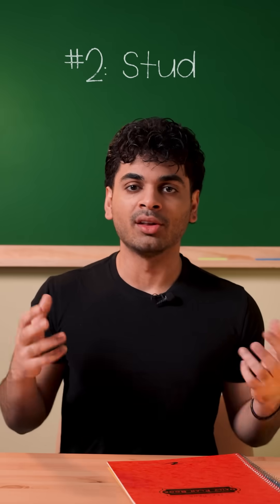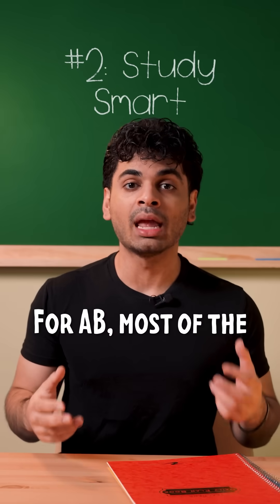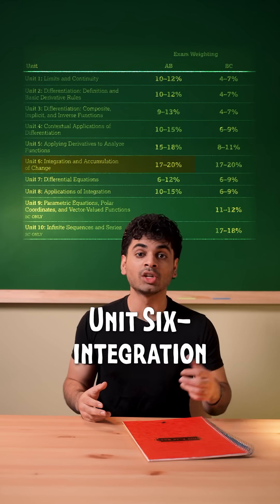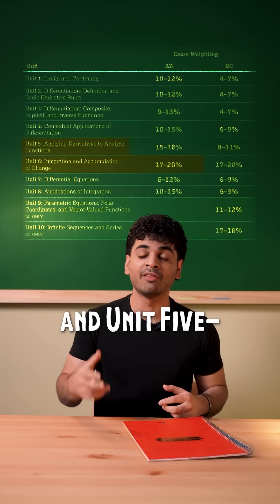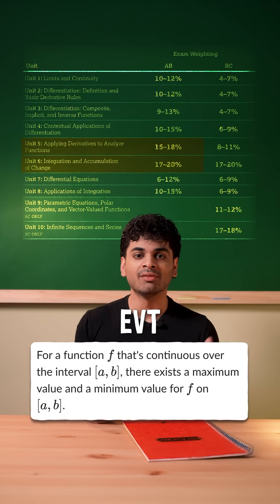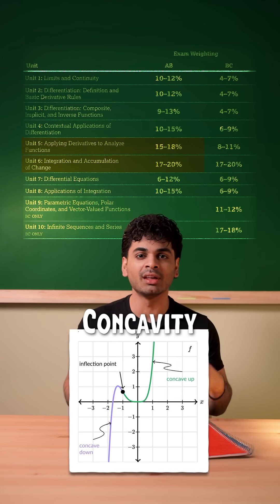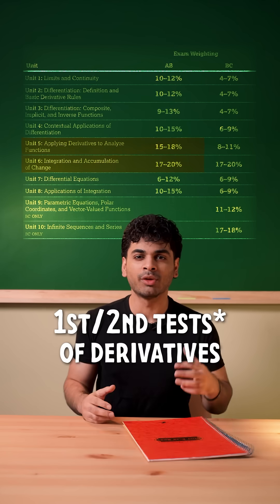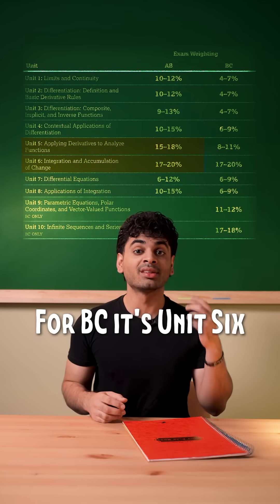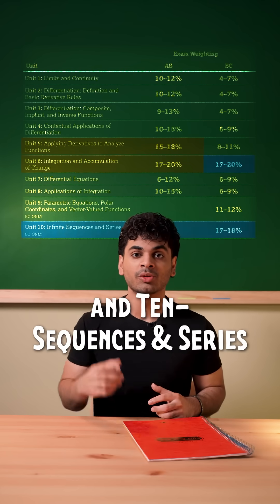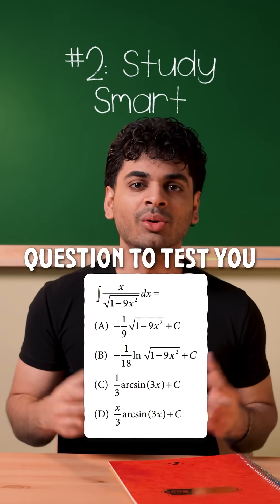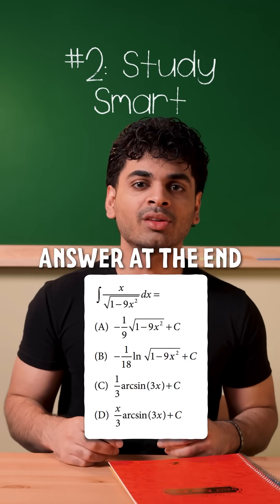Number two, study smart. For AB, most of the MCQs focus on unit six, integration, and unit five, applications of derivatives. Think MVT, EVT, concavity, first and second rules of derivatives, etc. For BC, it's unit six and ten, sequences and series. Here's a unit six question to test you — I'll give you the answer at the end.